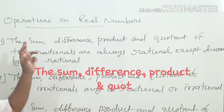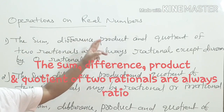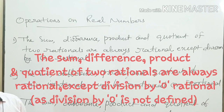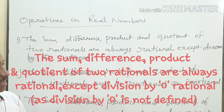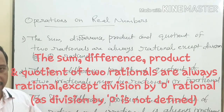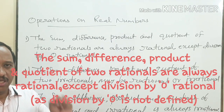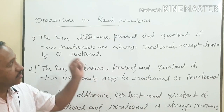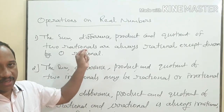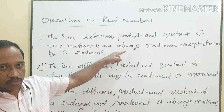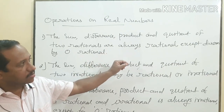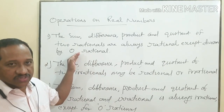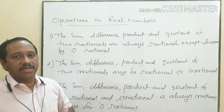The first point: the sum, difference, product and quotient of two rationals are always rational, except division by zero. That is, if you add two rationals, you will get a rational number. If you subtract two rationals, you will get a rational number. If you multiply two rationals, you will get a rational number. And if you divide two rationals, except by zero, you will get a rational number.